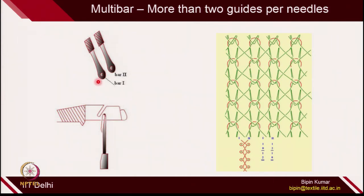When you have a 6 bar construction — bar 1, bar 2, bar 3, bar 4, bar 6 — in that case you need to provide a lapping plan for all 6 bars. In today's lecture, we are focusing mainly on 2 bar constructions. If you understand 2 bars, then 3 bar and 4 bar is just a generalization of the principles used in 2 bar construction.